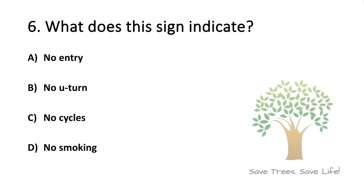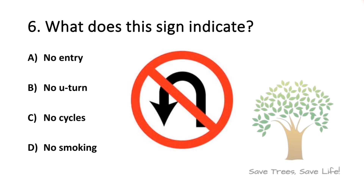Question number 6. What does this sign indicate? Option A: No entry. Option B: No U-turn. Option C: No cycle. Option D: No smoking. So the answer is option B, No U-turn.